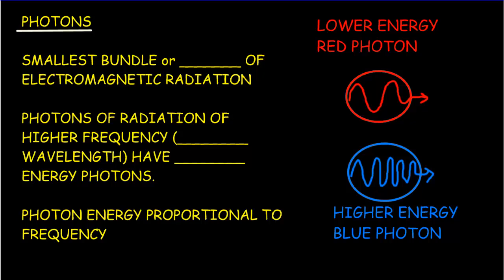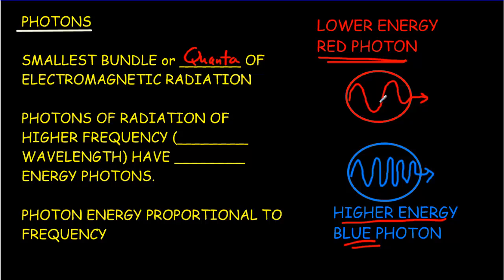A photon is the smallest bundle of energy in an electromagnetic wave — it's a quanta. We can't get half a quanta of energy; we always get a full quanta, a full photon of energy. If we've got red light, the red photons have less energy than blue light, which has a higher frequency and a shorter wavelength, and therefore a higher energy. So the red photons don't have as much energy as the blue photons.